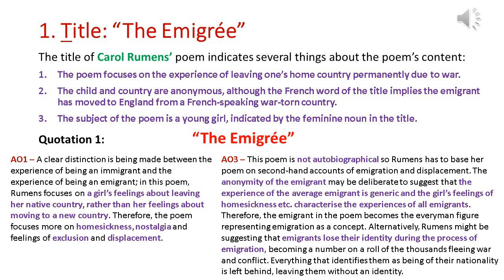The anonymity of the émigré in the poem could also be symbolic of the fact that emigrants lose their identity during the process of emigration — they become a number on a roll, they lose everything that identifies them as belonging to their homeland.